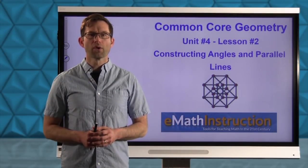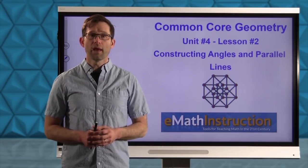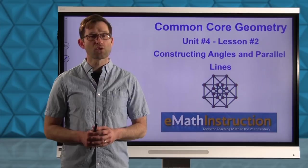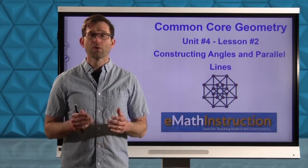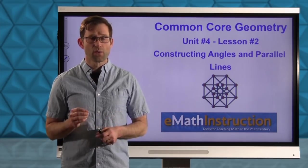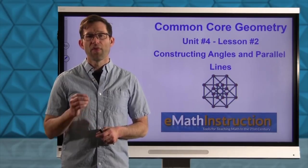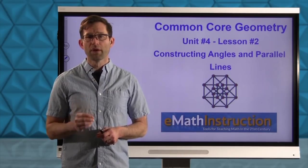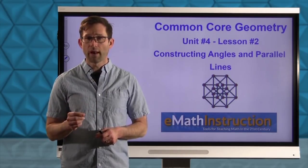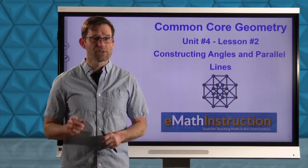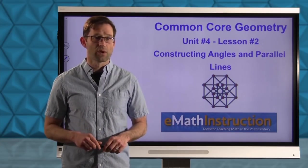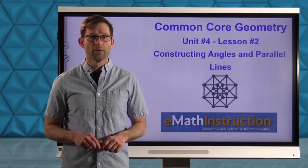Hello and welcome to another Common Core Geometry lesson by E-Math Instruction. Today we're going to be doing Unit 2, lesson number two on constructing angles and parallel lines. Unit 4 is all about constructions, and remember from our last lesson that means we're going to be using a compass and a straight edge to make these constructions and nothing else. So if you haven't already taken out your compass and straight edge, take a moment to do so now.